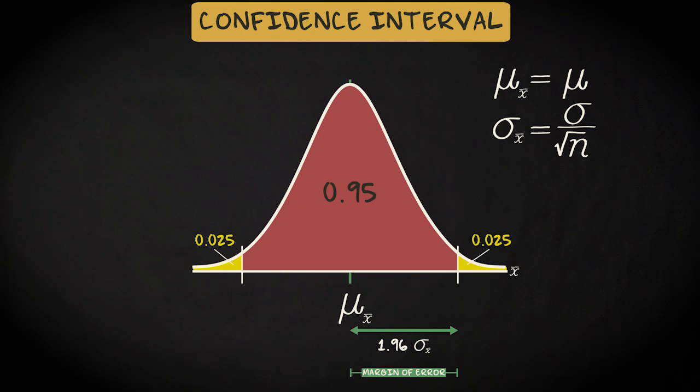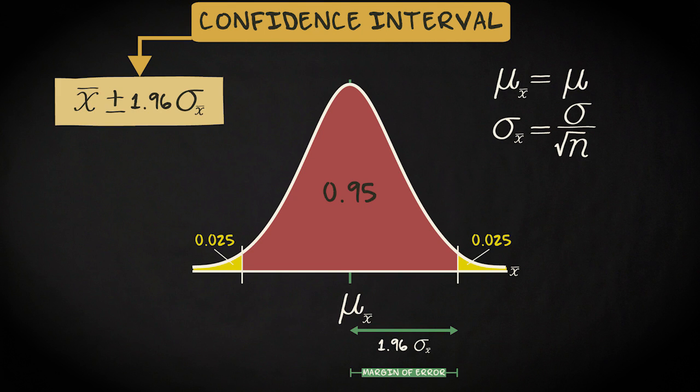Now, the formula of the 95% confidence interval is the following. It is the point estimate, or the sample mean, plus and minus the margin of error, which equals 1.96 standard deviations. Note that we're dealing with the sampling distribution of the sample mean here, so the standard deviation equals sigma divided by the square root of n.